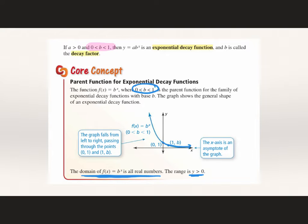So here again, we have exponential decay when b — whatever is being raised to the exponent — is in between 0 and 1.